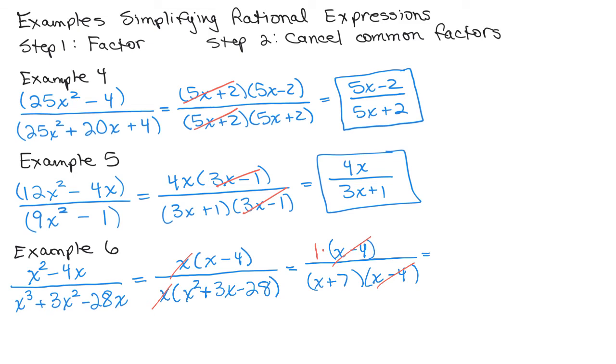Because 1 times X minus 4 is still X minus 4, right? So our answer here, we still have that 1 in the numerator and X plus 7 in the denominator. A lot of people will write that the answer is X plus 7. But remember, X plus 7 is in the denominator, not in the numerator.